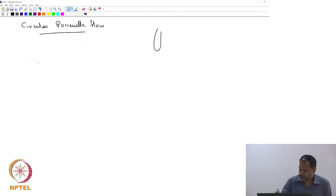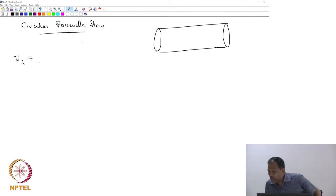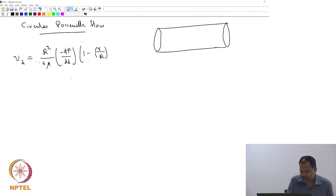What we have is a pipe with fluid flowing through it, and we found that v_z is given by r² divided by 4μ times minus dp/dz times (1 - r/R)². Is this right? Is this what we derived yesterday?